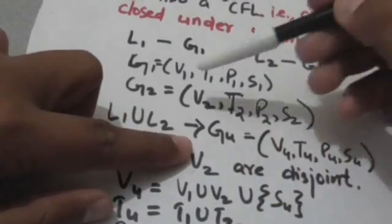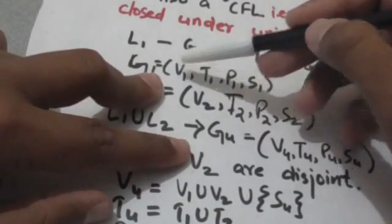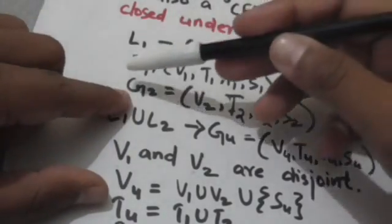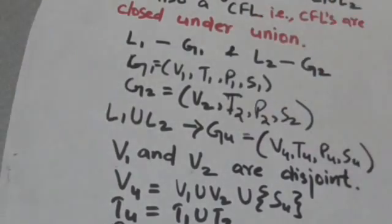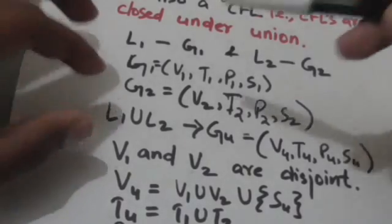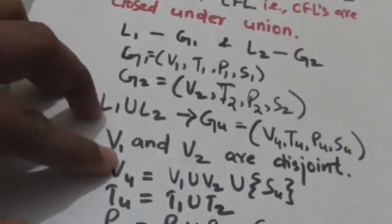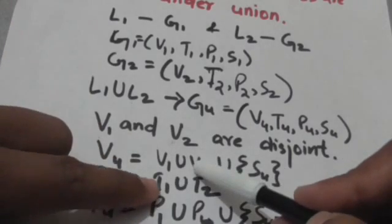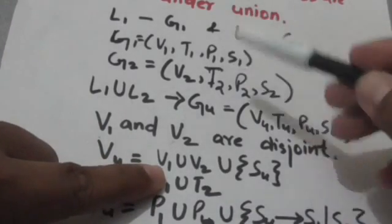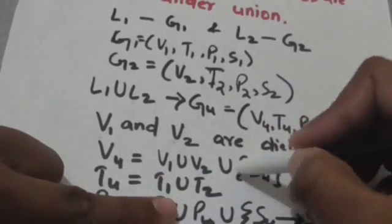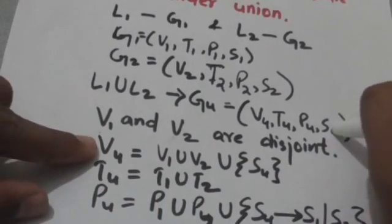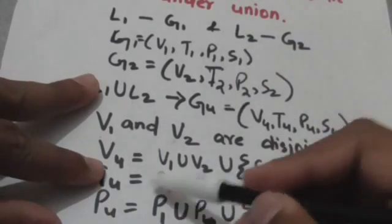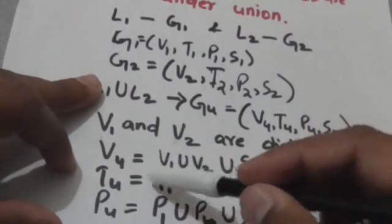For this, the sets V1 and V2 should be disjoint — V1 being the set of variables of grammar G1, and V2 the set of variables of grammar G2. If they are not disjoint, rename the variables to make them disjoint. In grammar GU, VU will contain all variables of grammar G1 and G2, plus a new start symbol SU. TU will contain all terminals of G1 and G2, so TU equals T1 union T2.